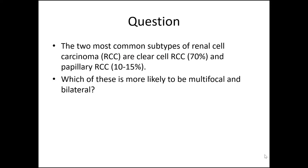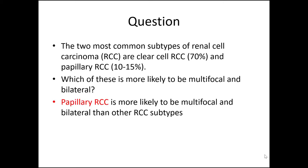Here's a question: The two most common subtypes of renal cell carcinoma are clear cell RCC at around 70% of cases and papillary RCC at around 10–15% of cases. Which of these is more likely to be multifocal and bilateral? The answer is papillary renal cell carcinoma.